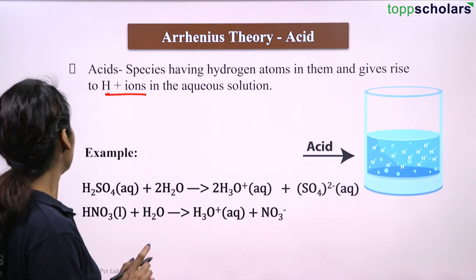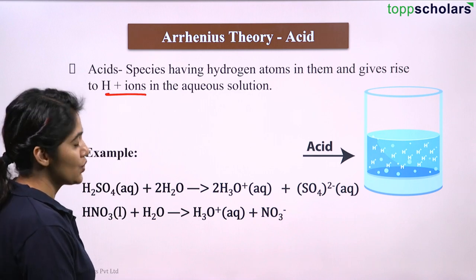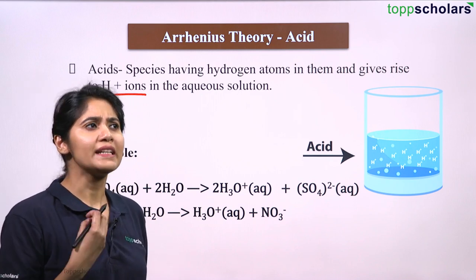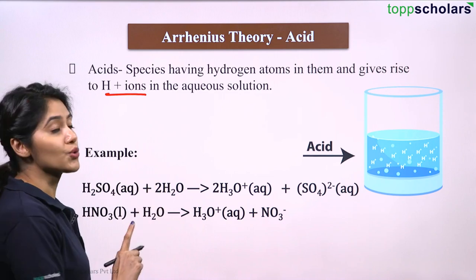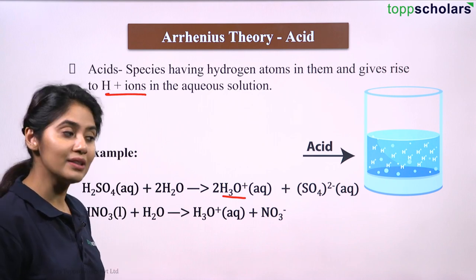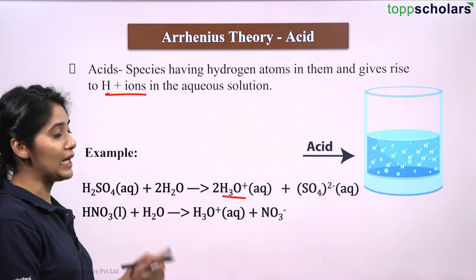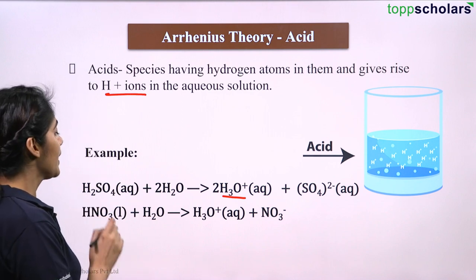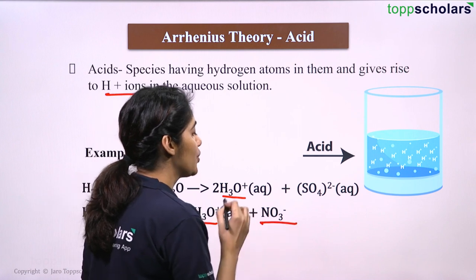For example, H2SO4 in water will release H+ ion and SO4 2- ion. In aqueous solution, hydrogen cannot be found in a very free form — it always combines with H2O and forms a hydronium ion, H3O+. So if there is a hydronium ion present in aqueous solution, that means H+ was released. Even in the case of HNO3, nitric acid, hydronium ion can be seen and NO3- is released.